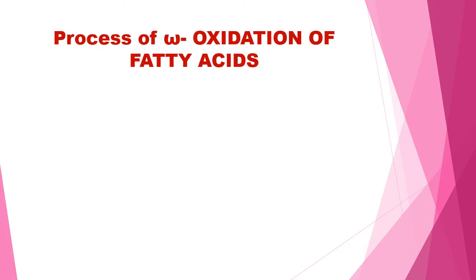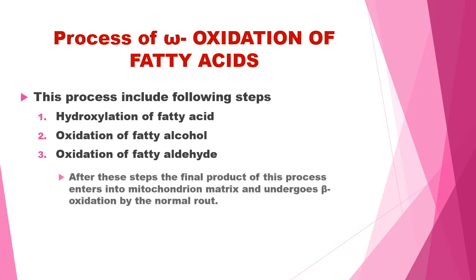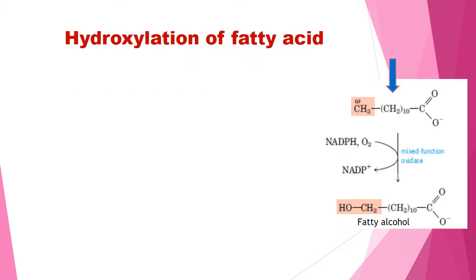The process of omega oxidation of fatty acids includes three steps: hydroxylation of fatty acid, oxidation of fatty alcohol, and oxidation of fatty aldehyde. After these steps, the final product of this process enters into the mitochondrion matrix and undergoes beta oxidation by the normal route.